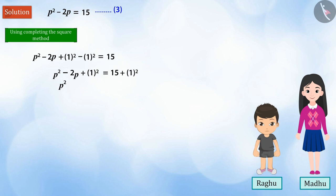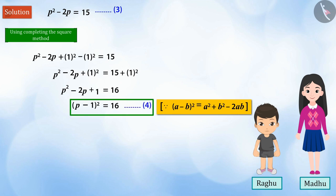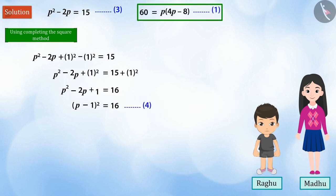Thus, we get the equation p squared minus 2p plus 1 is equal to 16, which can be written as equation 4. Note that the solution of equation 1 will be the same as that of equation 4, which gives the value of p minus 1 is equal to plus or minus 4 after solving.